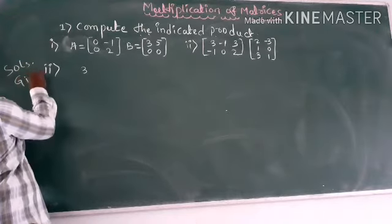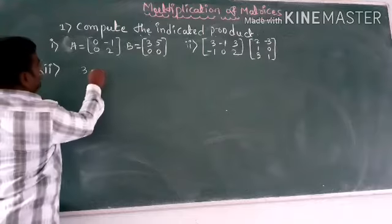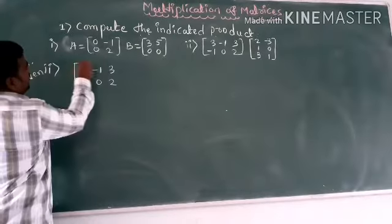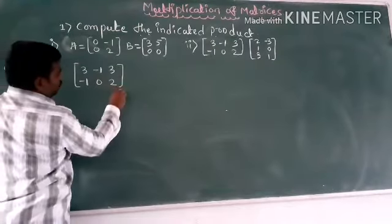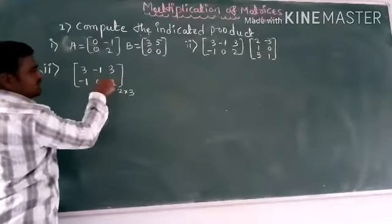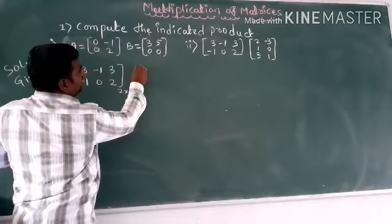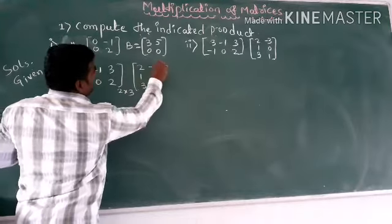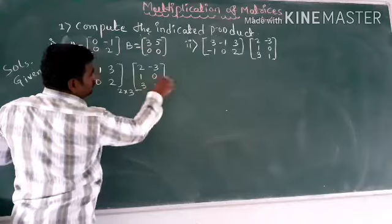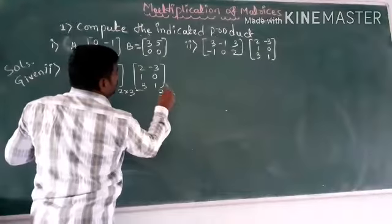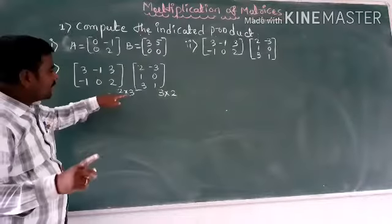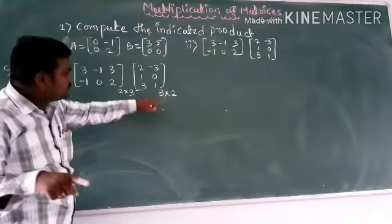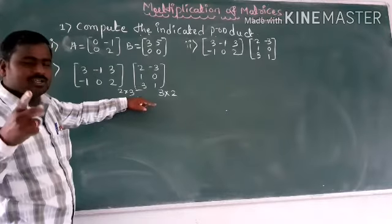Given matrix A is a 3×1 matrix: [3, -1, 0]ᵀ, and matrix B is a 2×3 matrix with two rows and three columns: [2, -3, 1; 0, 3, 1]. The condition is that the number of columns in A must equal the number of rows in B. Here, 2 equals 2 and 3 equals 3, so multiplication is valid.